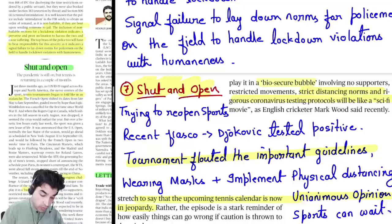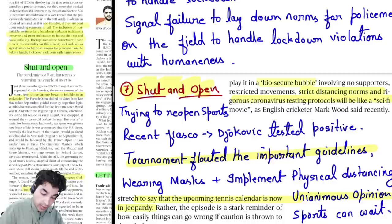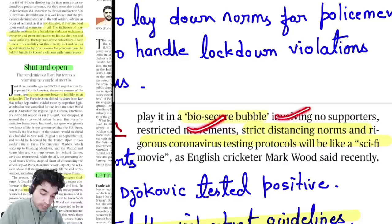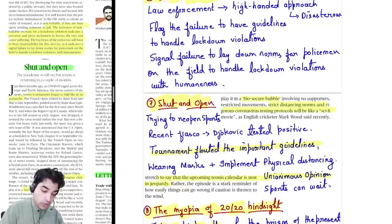Seventh news: Shut and Open — trying to reopen sports. A fiasco occurred recently when Novak Djokovic tested COVID-19 positive at a tournament that flouted important guidelines. Like the T20 IPL and the Olympics that was postponed, sports are trying to reactivate. But if done in a hurry, such fiascos happen — leading players testing COVID-19 positive. The article discusses playing in a bio-secure bubble — no supporters, restricted movements, only digital cameras, strict distancing norms.